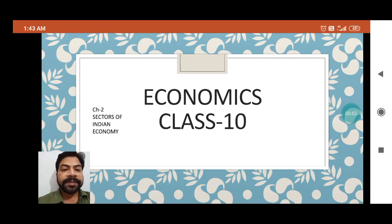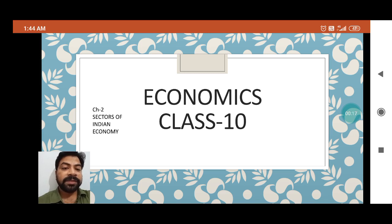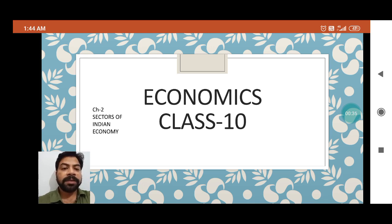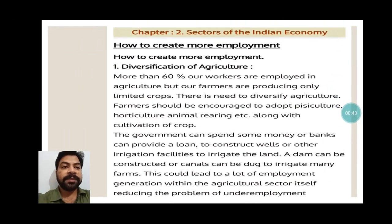Good morning dear students. This is the ninth and last video of Chapter 2 Economics — the chapter name is 'Sectors of Indian Economy.' This video is for students of standard 10. Here we will read about how to create employment. Earlier in our previous video we read about unemployment and what the government is doing to provide jobs to people, especially rural people. Here we will see some more ideas to understand how to create more employment.